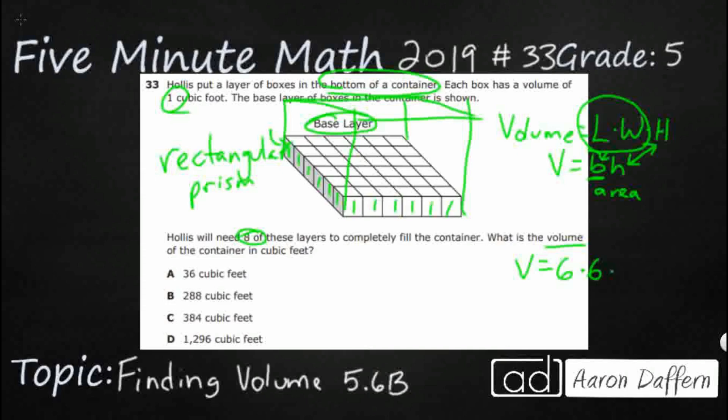And then we need to multiply that by our height. And so let's just first see what this base layer is. If you've got six across and you've got six down. So what you have, you have 36. So this is your base layer of 36 cubes.